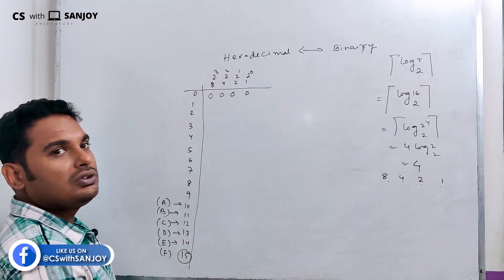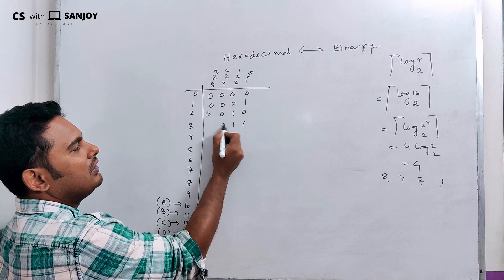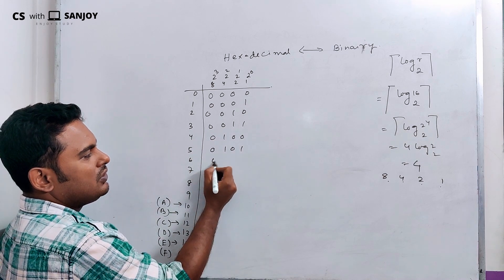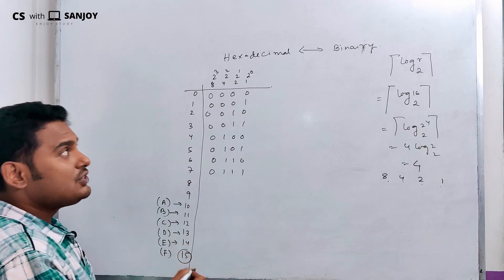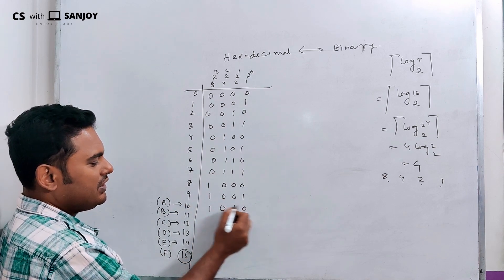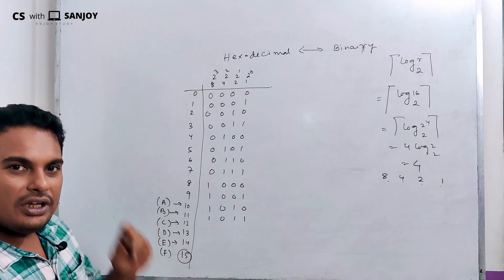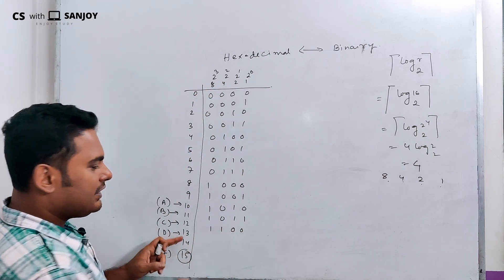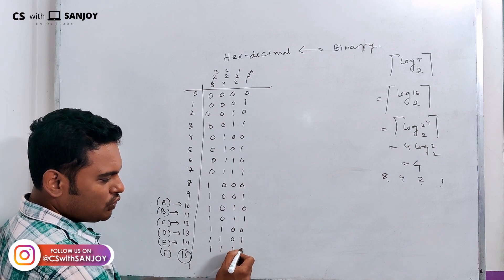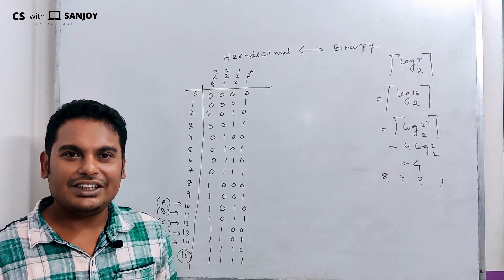The 4-bit binary representations: 0→0000, 1→0001, 2→0010, 3→0011, 4→0100, 5→0101, 6→0110, 7→0111, 8→1000, 9→1001 (8+1), 10→1010 (8+2), 11→1011 (8+2+1), 12→1100 (8+4), 13→1101 (8+4+1), 14→1110 (8+4+2), 15→1111. This is the 0 to 15 binary number representation.